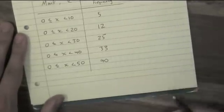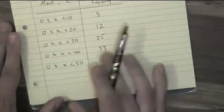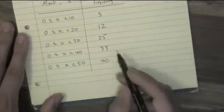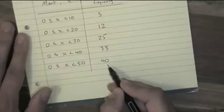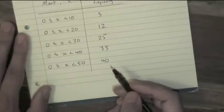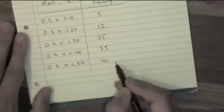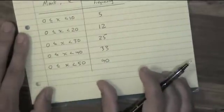Often the question will tell you how many people were surveyed, and what you need to do is check that the number you got at the end of your table here matches the one in the question if it's given to you. The last row should contain everybody that was surveyed.